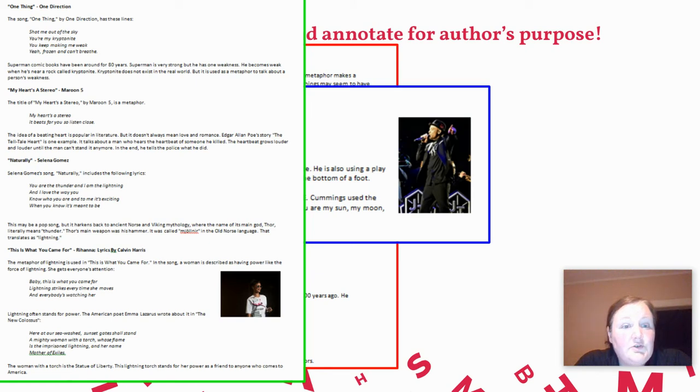Superman comic books have been around for 80 years. Superman is very strong, but he has one weakness. He becomes weak when he's near a rock called kryptonite. Kryptonite does not exist in the real world, but it is used as a metaphor to talk about a person's weakness.